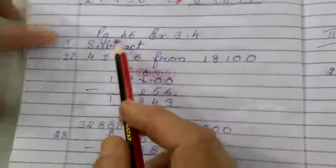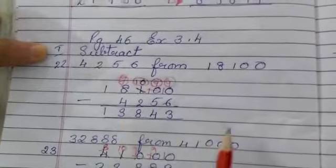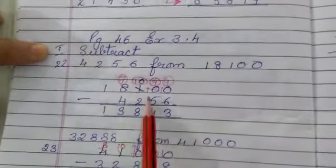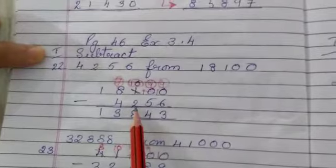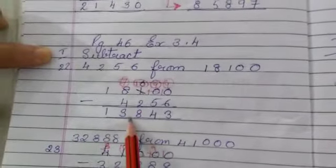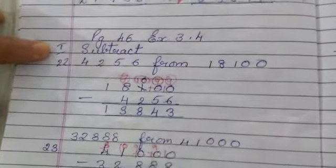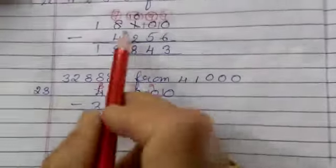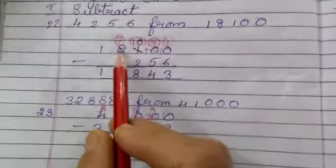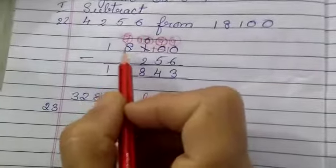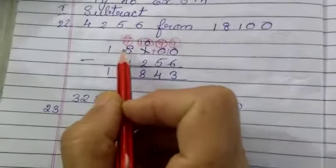Now this is exercise page 46, exercise 3.4. Subtract. These are simple subtraction sums. 18,100 minus 4,256 we get 13,843. Here we have to borrow. If the number is big you know how we have to borrow. I have already explained but I will still explain you.